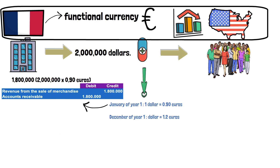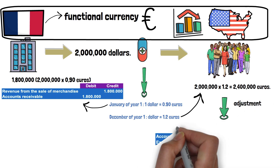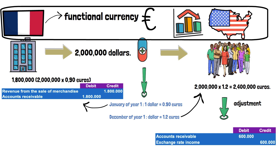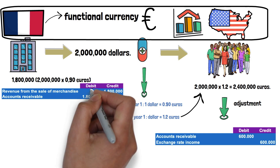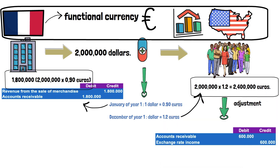In December of the same year, the entity must recognize the effect of the variation in the exchange rate. This variation is the effect of recognizing a transaction with different exchange rates at two different times. In January of year 1, 2 million dollars is equal to 1,800,000 euros. And in December of year 1, 2 million dollars is equal to 2,400,000 euros.